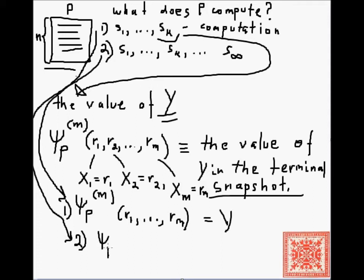That covers Case 1. In Case 2, the program runs infinitely long — there are infinitely many snapshots and no terminal snapshot. In that case, ψ_P(r1, …, rM) is undefined.